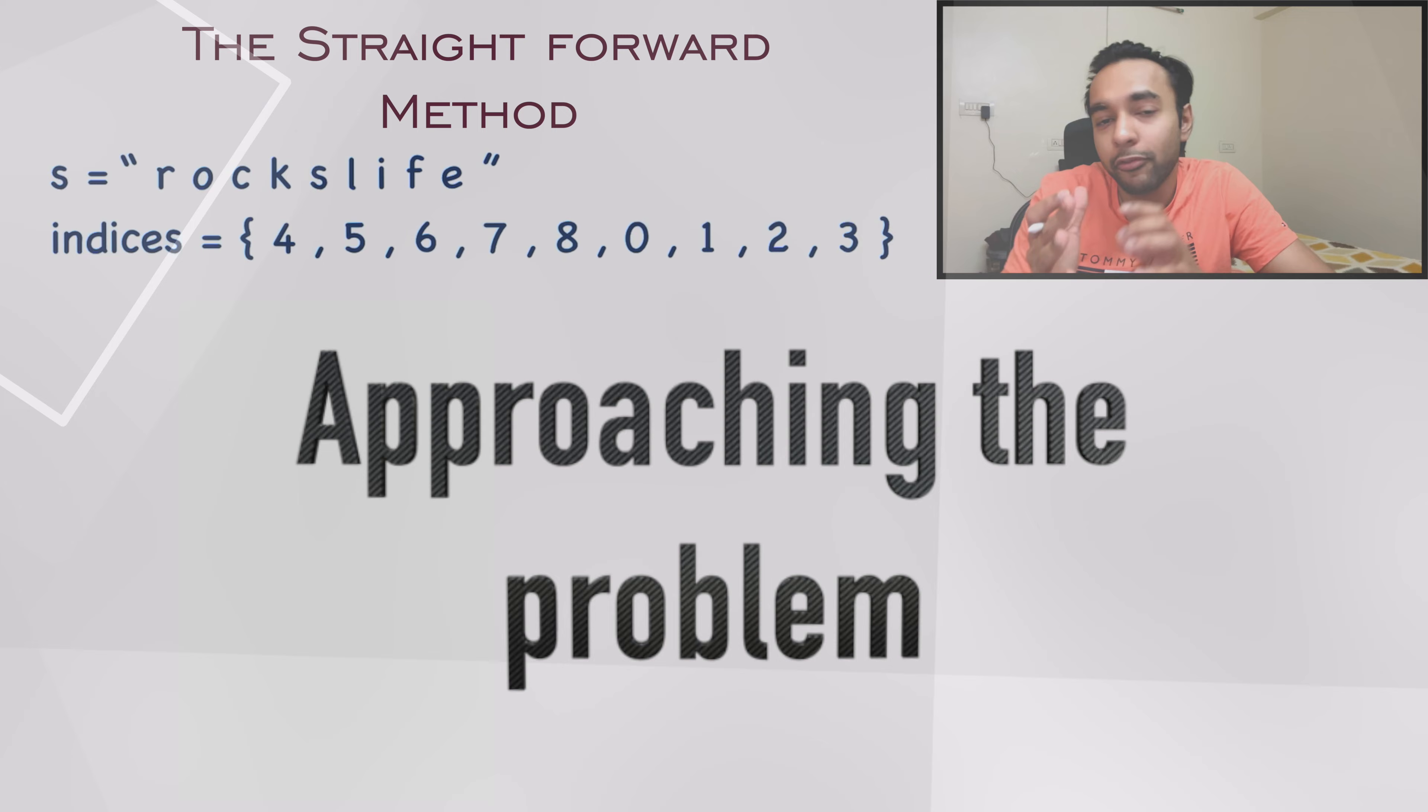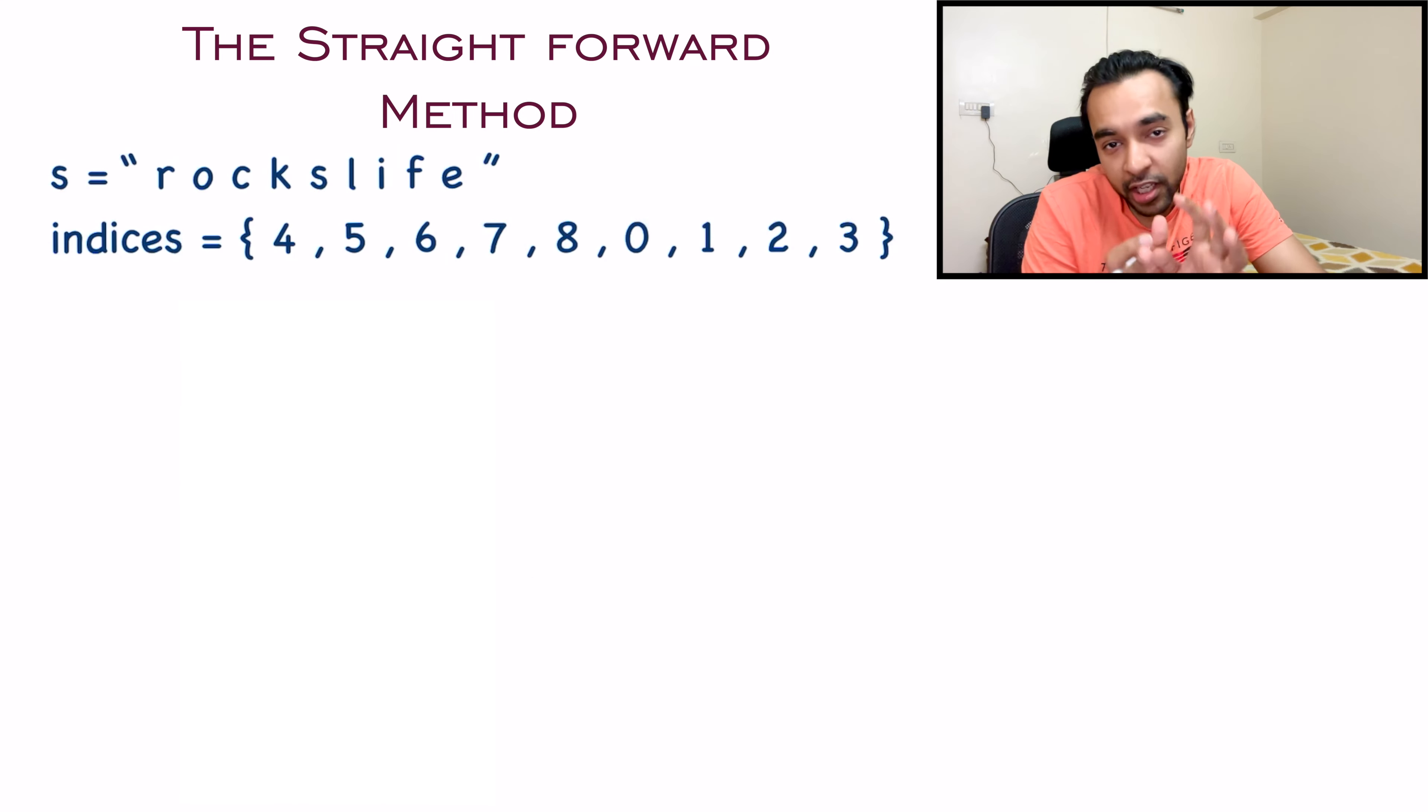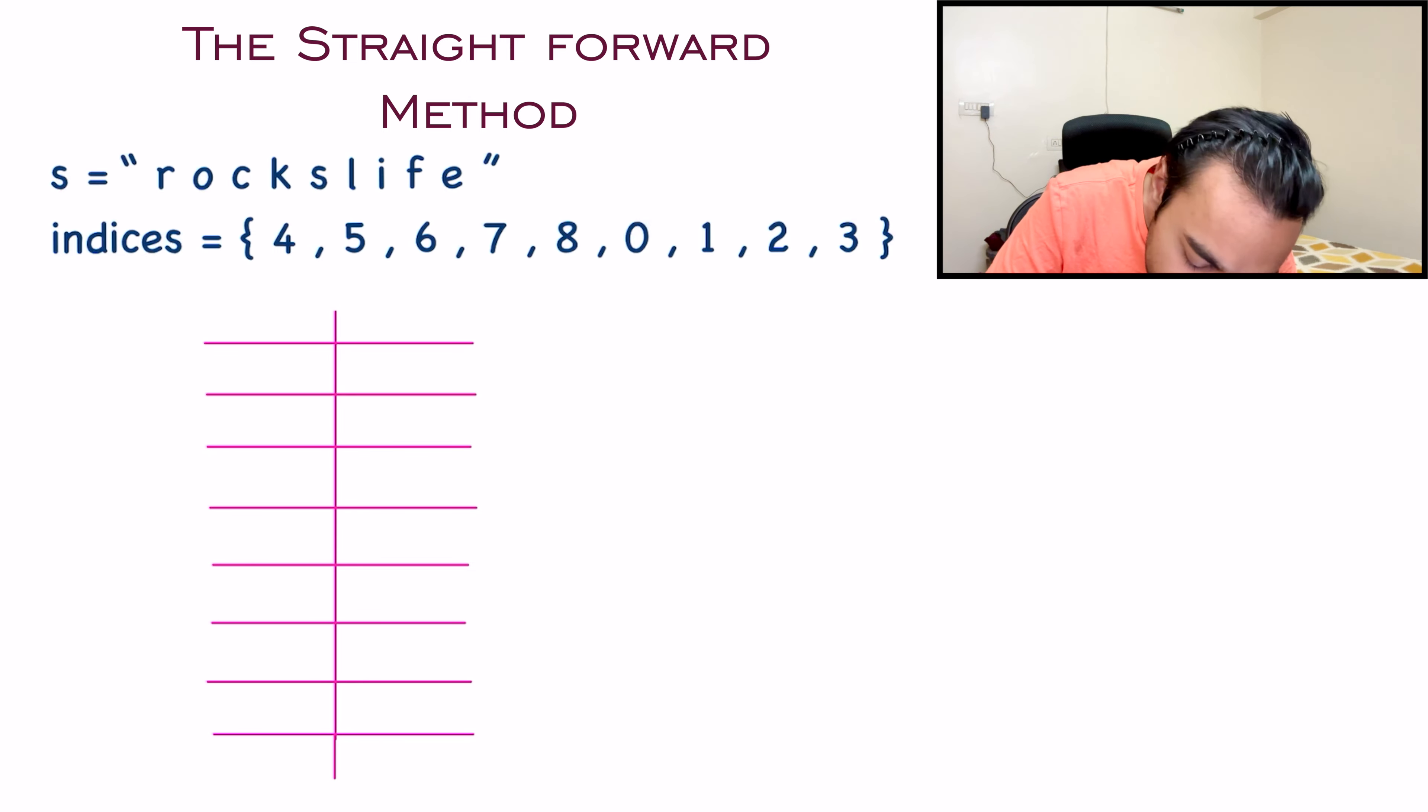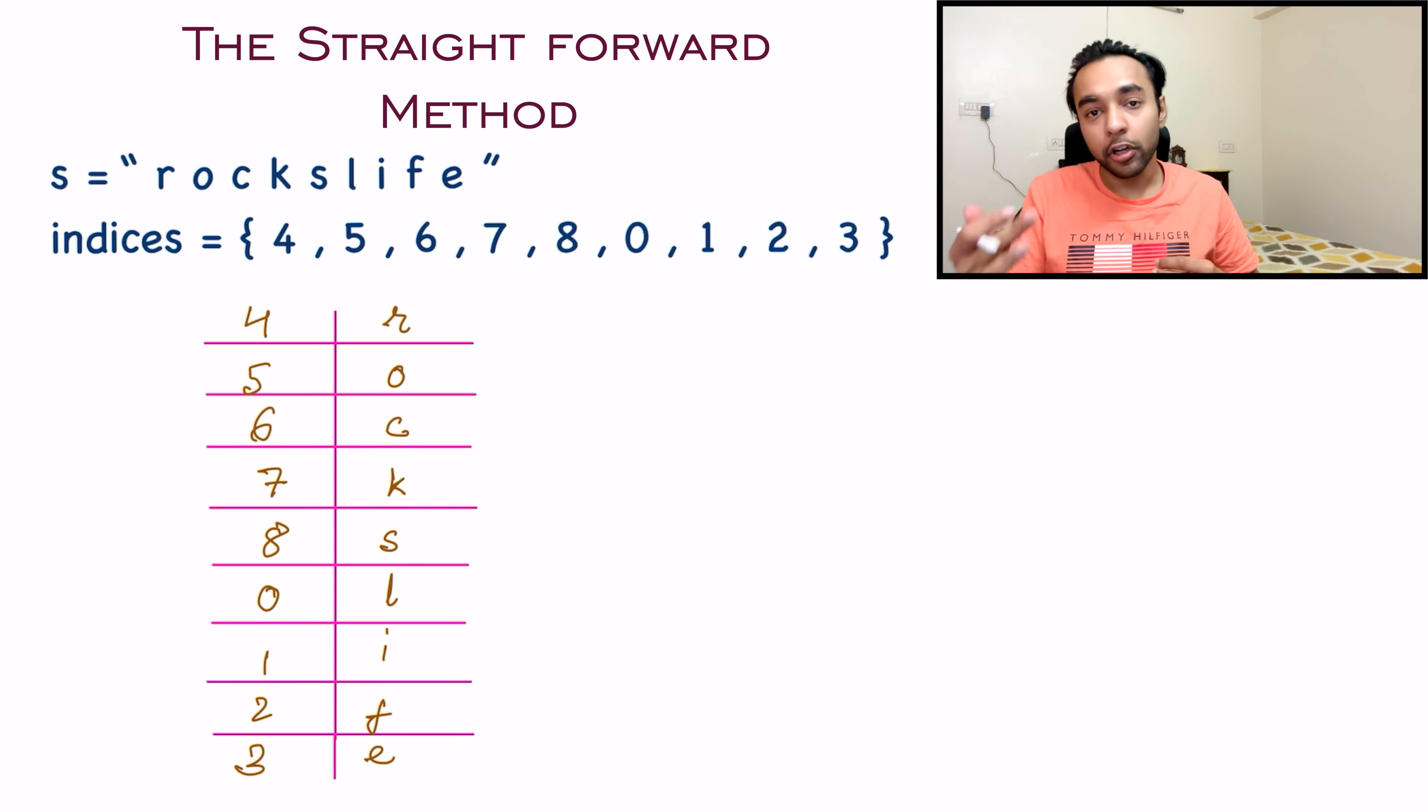When you start thinking of a solution, what is the first thing that comes to your mind? You will try to think that you need some sort of a mapping that can tell me that the fourth character is R. You need a mapping that can tell that the third index will be E. So this tells me that I need some sort of a map. If I have a map, how can I populate it? I can say that the fourth index should be R. Moving ahead, I can say that the fifth index should be O. The sixth index will be C. And then similarly, you are going to populate your entire map.